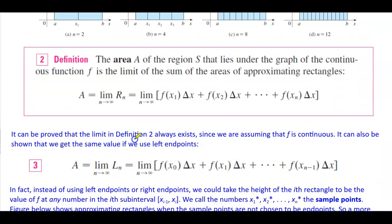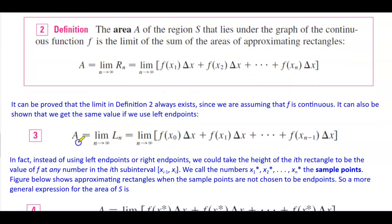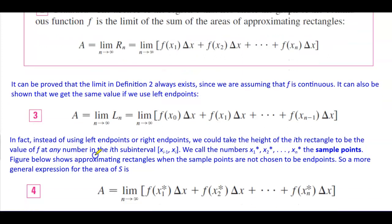It can be proved that the limit in Definition 2 always exists, since we are assuming that f is continuous. It can also be shown that we get the same value if we use left endpoints. For Definition 3, the area as the limit as n approaches infinity of L subscript n equals the limit as n approaches infinity of f of x subscript 0, starting with the left endpoint. In fact, instead of left or right endpoints, we could take the height of the i-th rectangle to be the value of f at any number in the i-th subinterval from x subscript i minus 1 to x subscript i. We call these numbers x subscript 1*, x subscript 2*, and so on — these are called sample points.